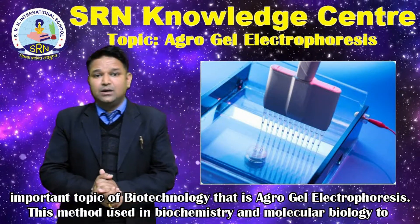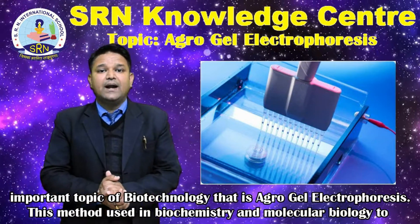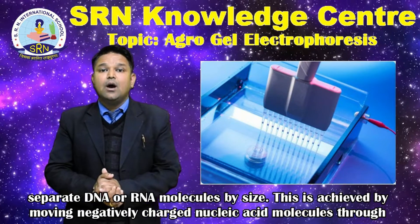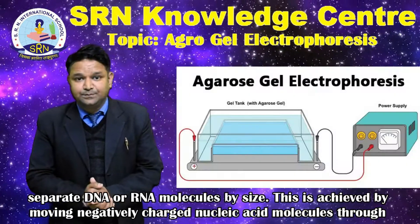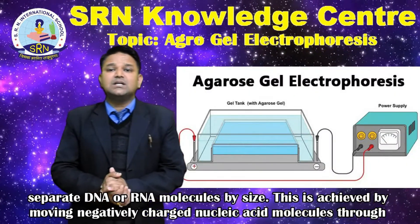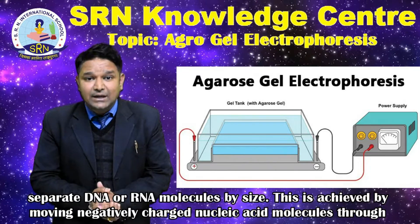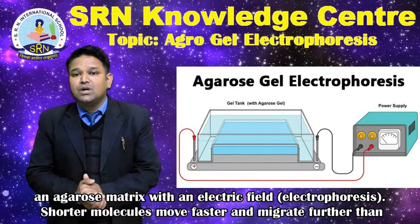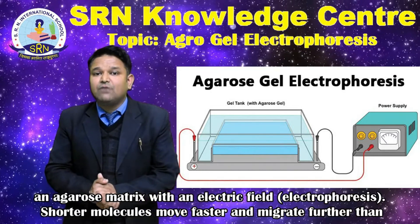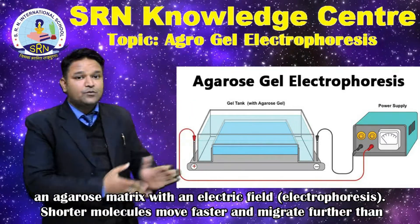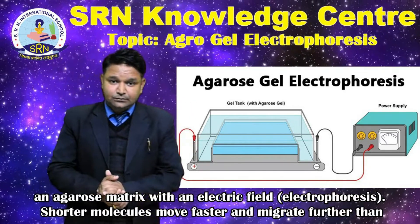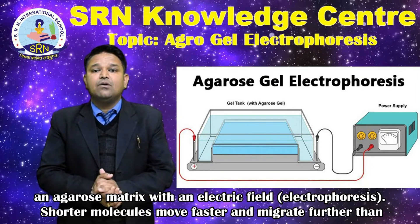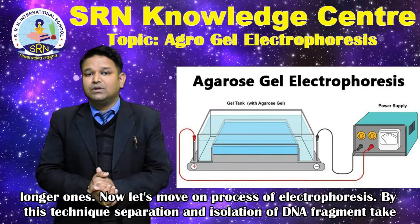This method is used in biochemistry and molecular biology to separate DNA or RNA molecules by size. This is achieved by moving negatively charged nucleic acid molecules through an agarose gel matrix with an electric field, i.e. electrophoresis. Shorter molecules move faster and migrate further than longer ones.